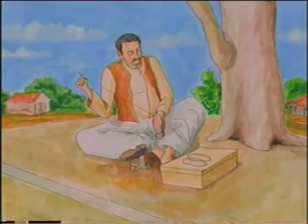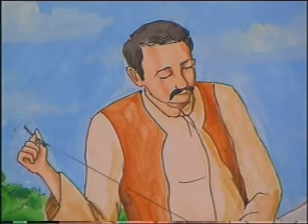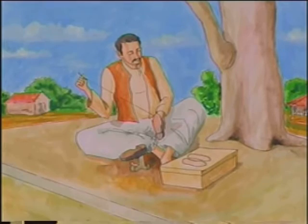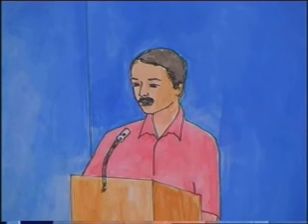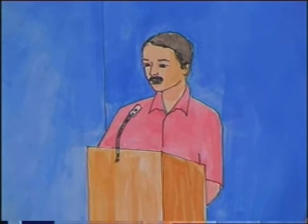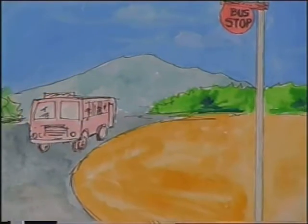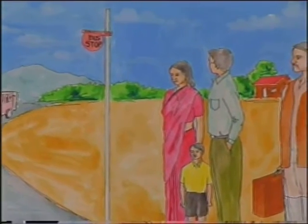Once upon a time there lived a cobbler. The sad part of his work was that he did not really know his job. When he was handed a pair of chapels for a new set of soles, he put in soles of varying thickness so that the fellow who wore it appeared lame. Another accident occurred when he failed to properly stitch a shoe. His customer was in a hurry to get to a meeting; consequently he arrived at the meeting with his foot protruding out of a large gap in front. The cobbler earned more notoriety than fame and more brickbats than money.